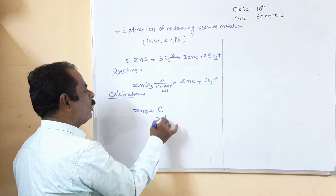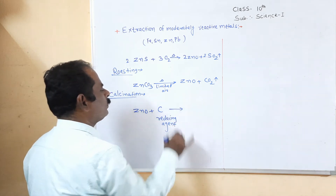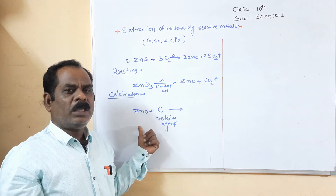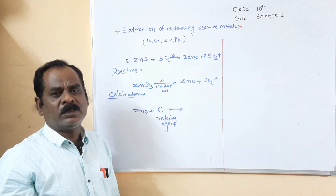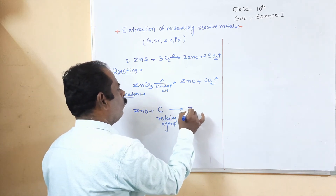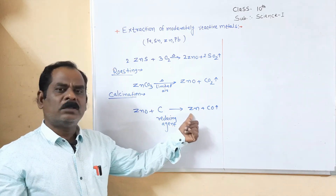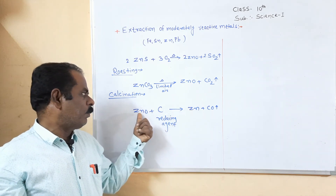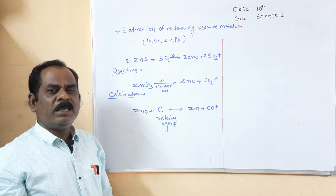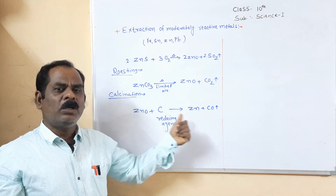Carbon is used as the reducing agent here. A reducing agent is defined as an element which has the ability to remove oxygen from a compound. When zinc oxide is heated with carbon, we get zinc metal and carbon monoxide. This is the first example of the extraction of a moderately reactive metal: convert the sulfide or carbonate ore to oxide, reduce the oxide, and we get the metal.